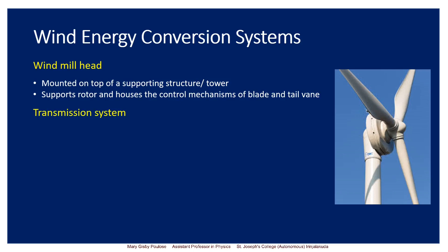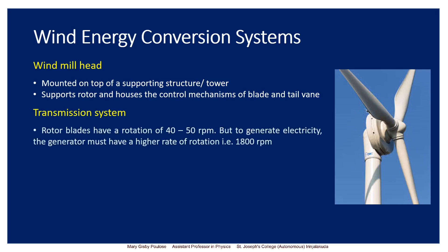The next component is the transmission system. Rotor blades have a rotation of 40 to 50 rpm, but to generate electricity the generator must have a higher rate of rotation — that is 1800 rpm.